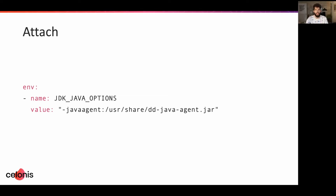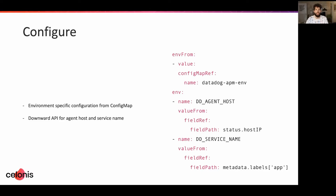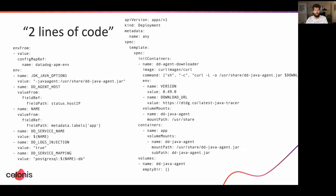Finally, we need to configure the trace agent. Again, we use environment variables for this. Kubernetes allows you to mount multiple environment variables from secrets or config maps. In each cluster, we have a config map containing environment variables for cluster-specific configuration, such as the cluster's name or region. At the beginning I promised that adding APM would be as simple as adding two lines of configuration — right now we're closer to 50 lines, so let's sort that out.